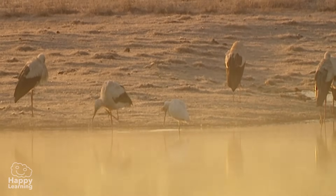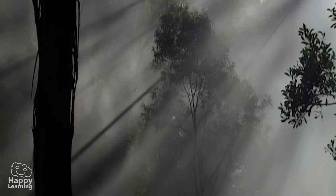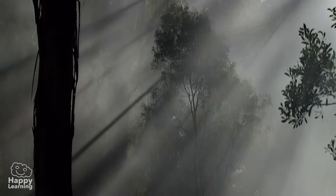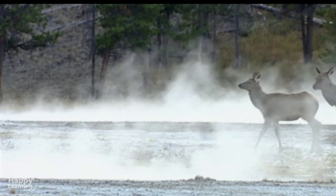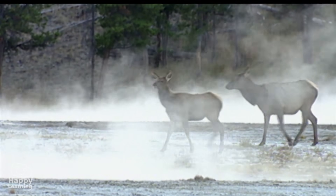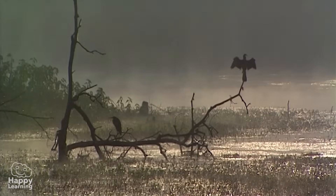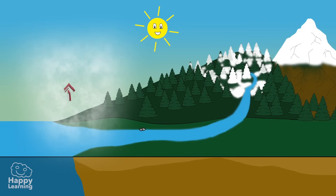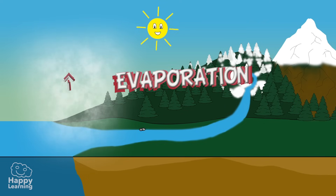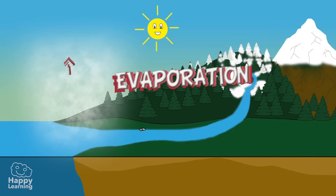Now, let's learn more about it. When the sun warms the water on the Earth's surface, it evaporates, converting itself into water vapor, or steam. And it begins its incredible journey, flying into the sky, up towards the atmosphere. This first stage of its journey is known as evaporation.